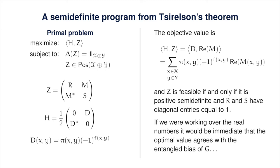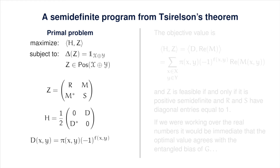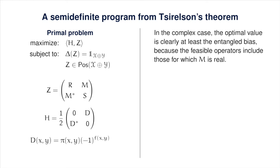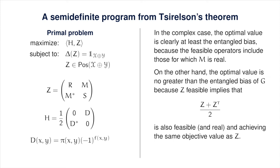If we were working over the real numbers, we would be done—the optimal value would equal the entangled bias by Tsirelson's theorem. In the complex case, the optimal value is clearly at least the entangled bias since feasible operators include those for which M has real entries. The optimal value is also no greater than the entangled bias, because if Z is feasible then so is Z-transpose, and therefore so is the average of Z and Z-transpose—a real-entry matrix achieving the same objective value as Z.